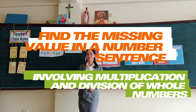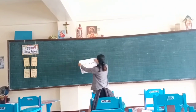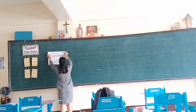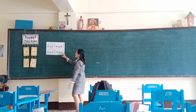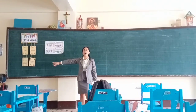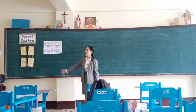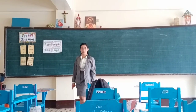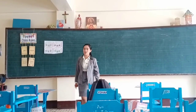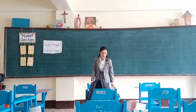Find the missing value in a number sentence. From this picture, how many boxes do you see? Very good. It has four boxes. And how many stars in each box? Very good. It has three stars in each box.